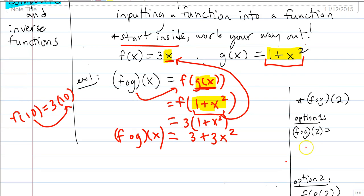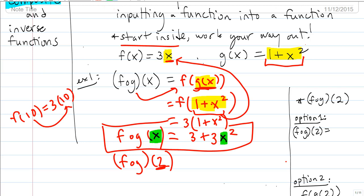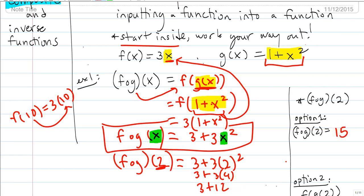One option is to find f of g of 2. Option 1: since we already have the composite function f of g of x equals 3 plus 3x squared, we plug 2 in place of x. That gives 3 plus 3 times 2 squared, which is 3 plus 12, or 15.